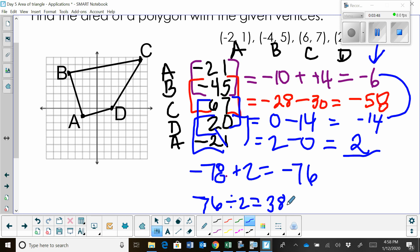So my area of that polygon is 38 square units. And that's how you use matrices to find the area of a polygon when it's graphed in a Cartesian coordinate plane. Hope this video was helpful.